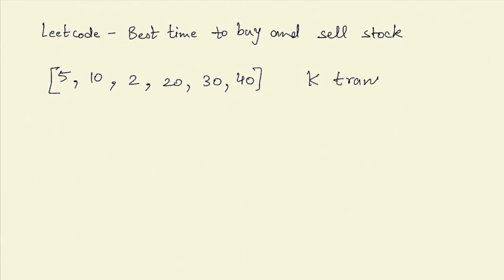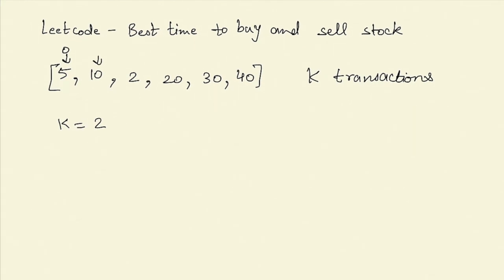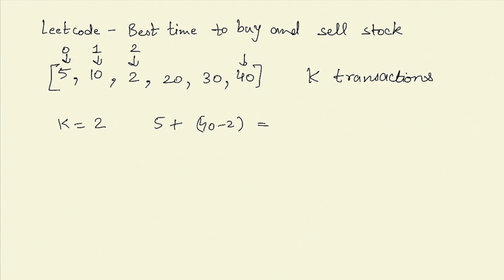The condition is that we can buy a stock only after selling the previous stock we have. For example, if K equals 2, the maximum profit we can obtain is: buying on day 0 and selling on day 1, which is 5, plus buying on day 2 and selling on the last day, which is 40 minus 2, giving us 43.